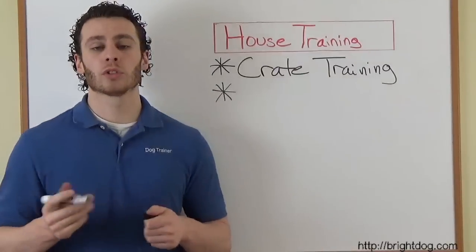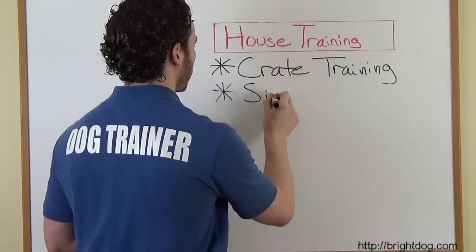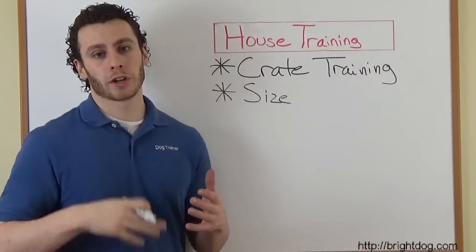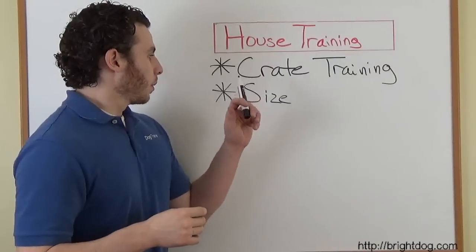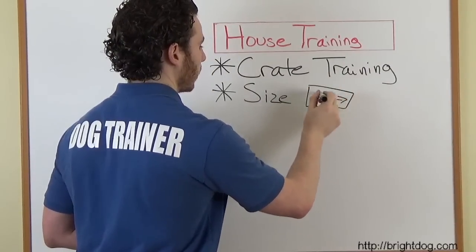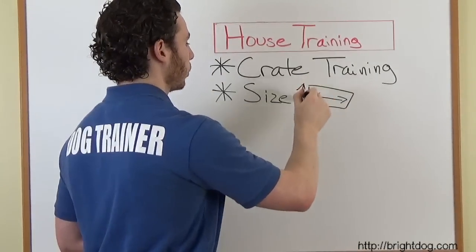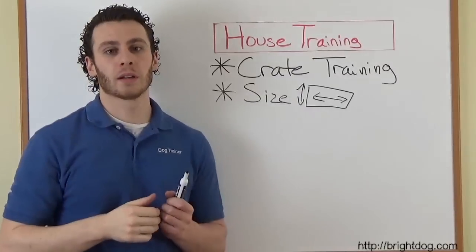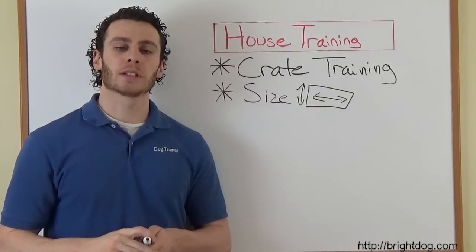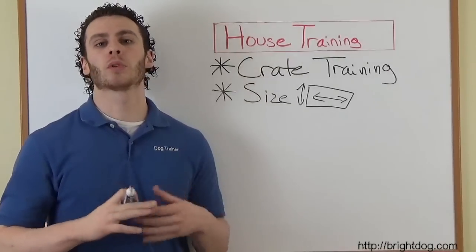What's going to happen is anytime that you're not able to supervise your dog, they go in the crate. Now, the size of the crate is very important. You have to get the appropriate size. If you have a super large dog, you're going to need to buy multiple crates, which is another reason why I don't like to do this. The crate should only be long enough that they can stand up and that they can turn around once, and the height should only be tall enough that they can just stand up without taking the top of their head. It has to be small because the idea behind the crate is that the dogs don't like to go to the bathroom in the same place they sleep.